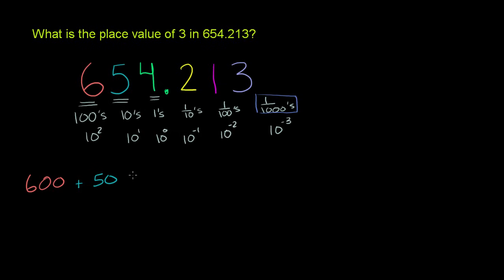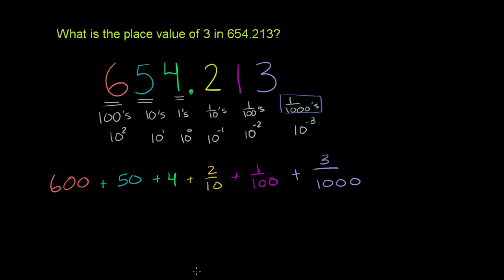2 tenths, so plus 2 tenths plus 1 hundredths plus 3 thousandths, plus 3 over 1, 2, 3 thousandths. Or we could write this, just to really make sure we understand what we're talking about when we mean place value. We can rewrite this number as